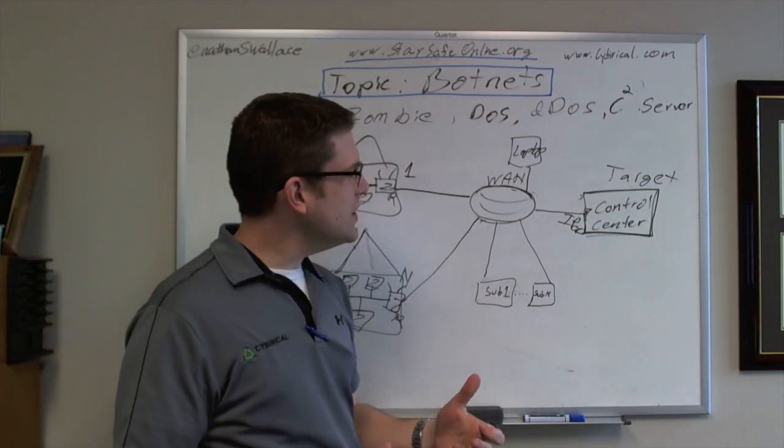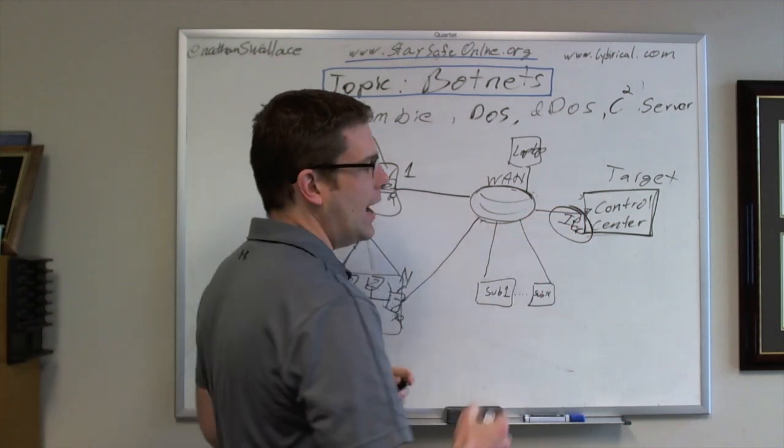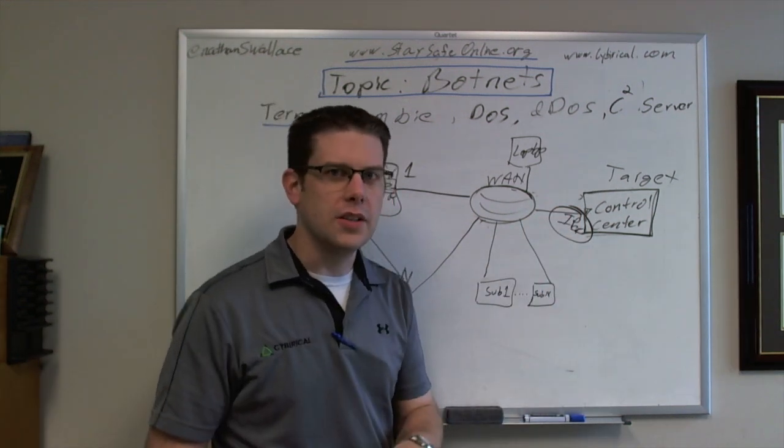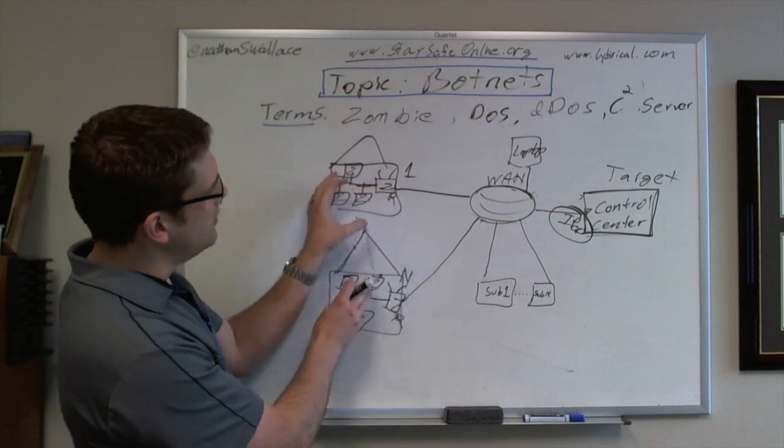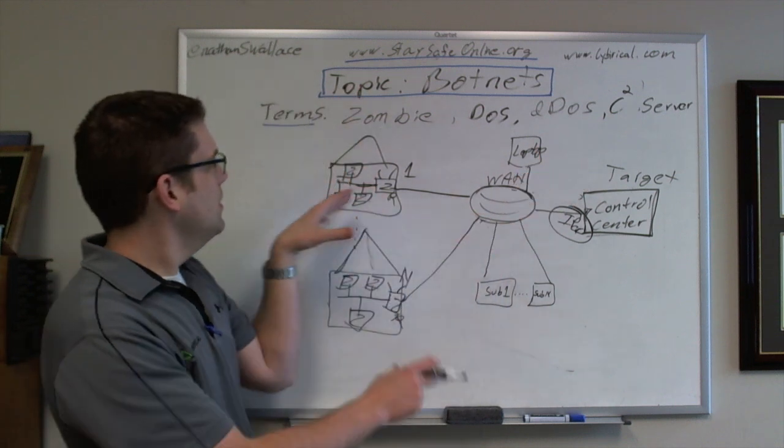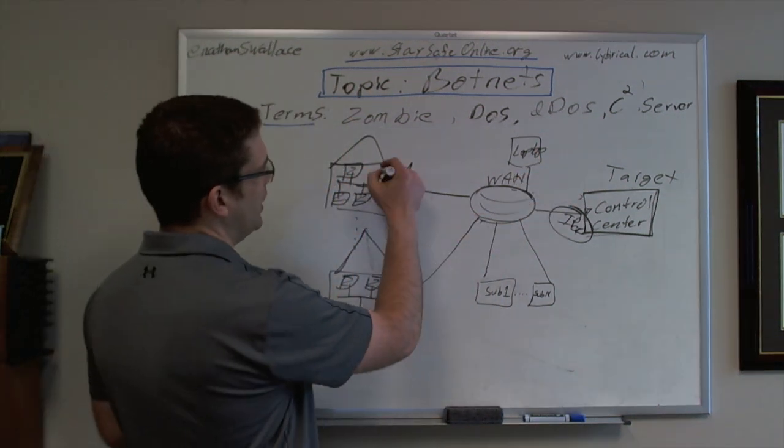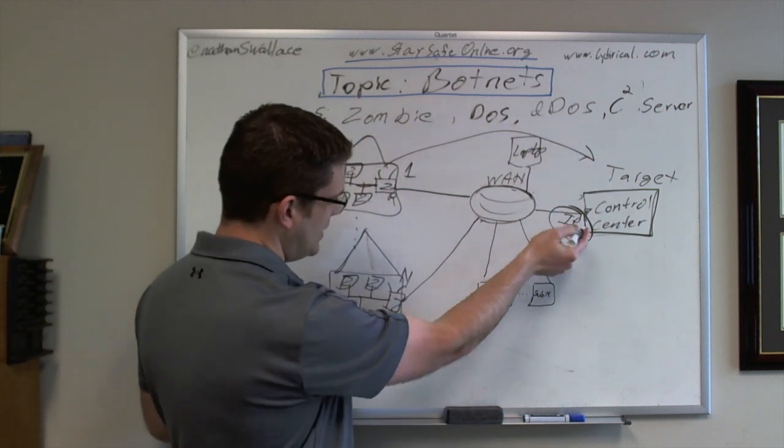Well, whoever's in control of this C2 server says, 'Okay, I have 3,000 devices, let's point to this guy, IP sub CC, the target.' So now all of these devices, not just one but all of them, they're pointing their traffic to this IP address.